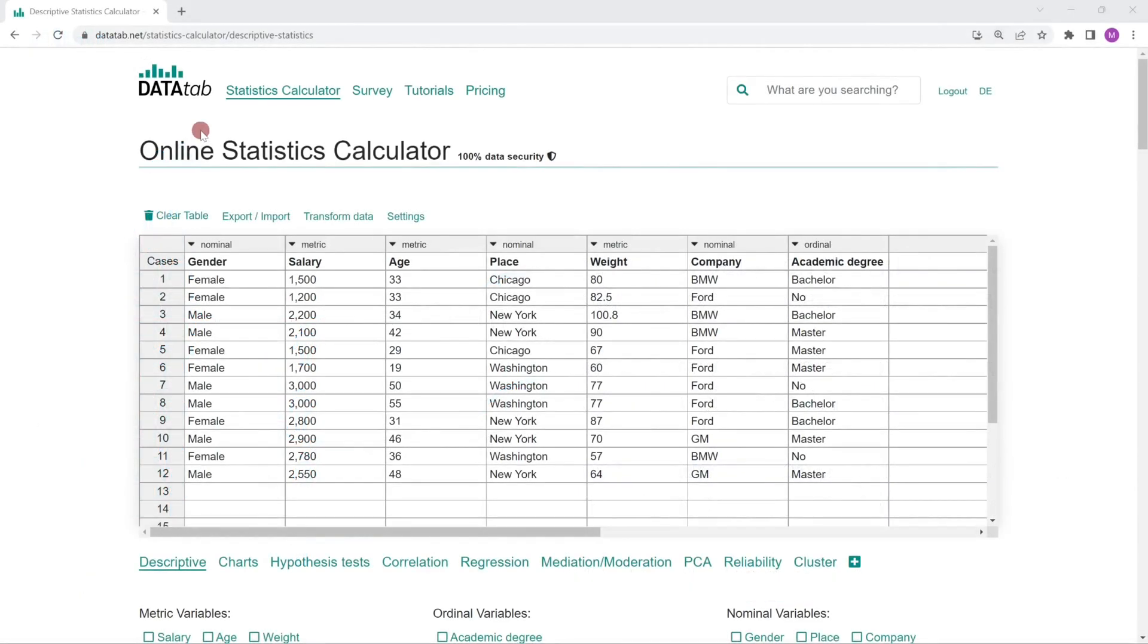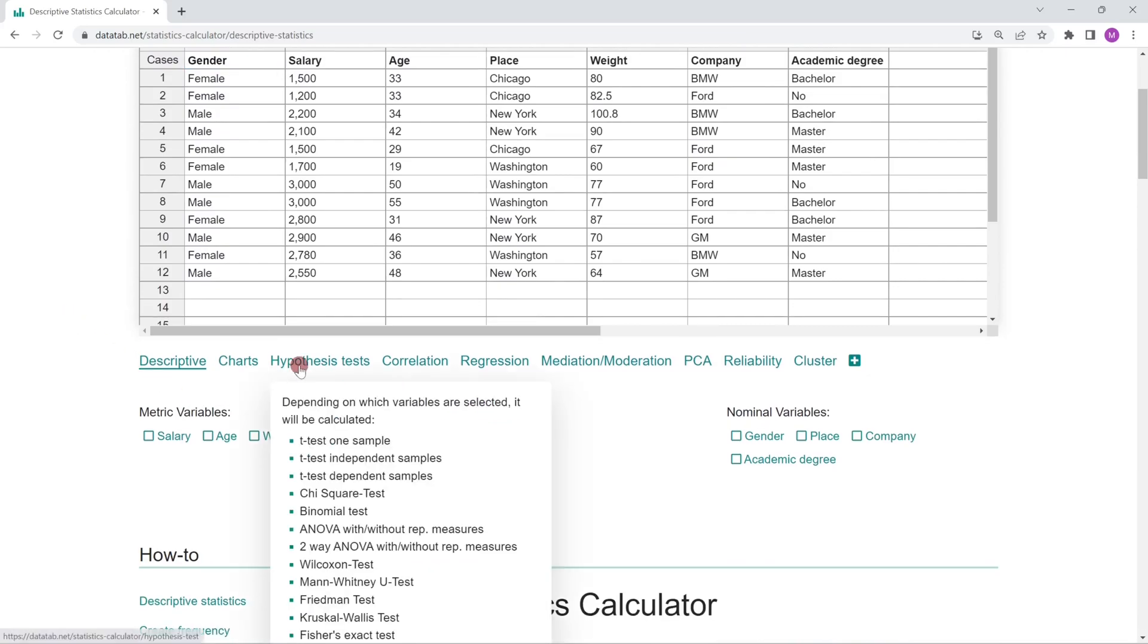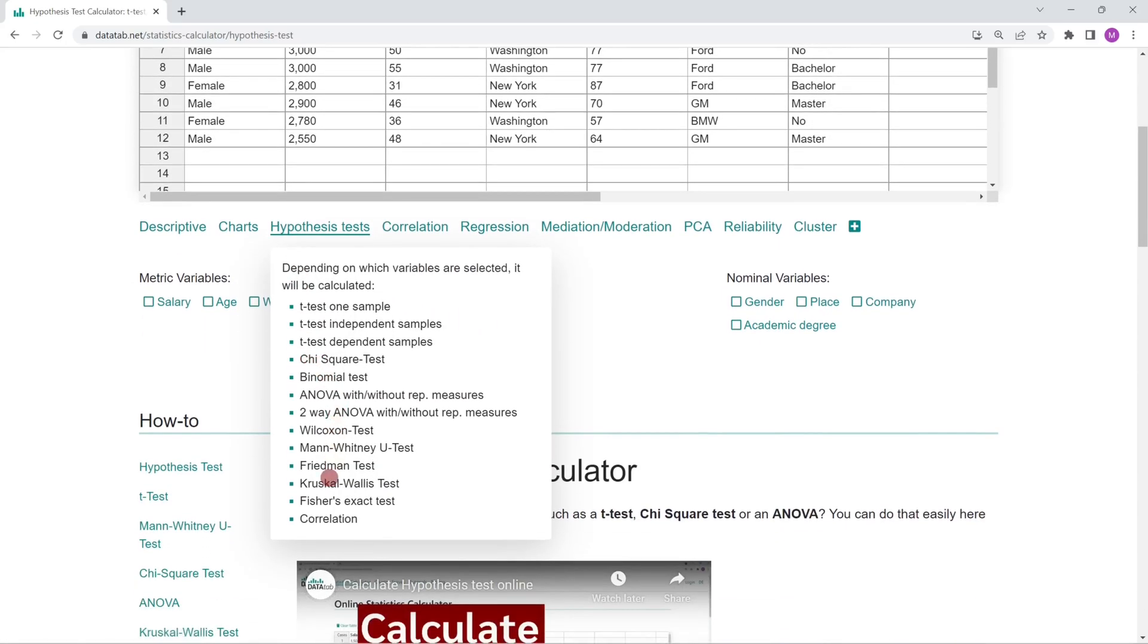And now I will show you how you can easily calculate the p-value for a variety of hypothesis tests online with DataTab. To do this, simply visit datatab.net, copy your own data into this table and click on hypothesis test. Depending on which variables you click on, DataTab will suggest a hypothesis test, for example a t-test, chi-square test, ANOVA, Wilcoxon test and many more.